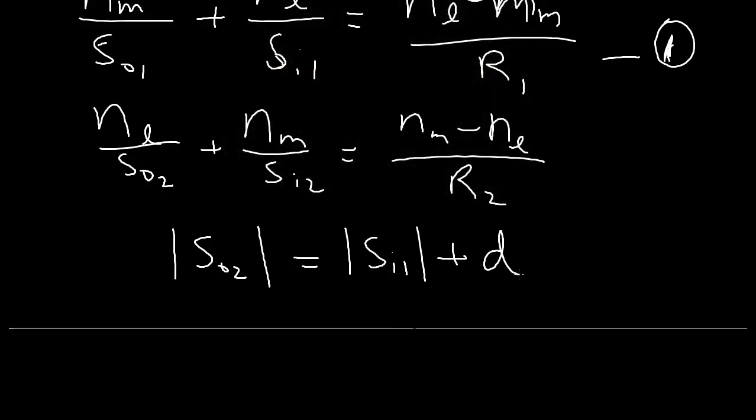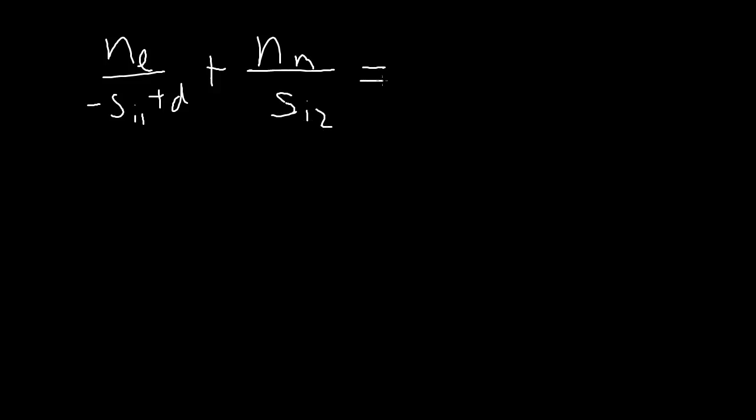And because SI1 is negative, to make that positive, we have to introduce a negative, negative SI1 plus D. So we can sub this in back here. This gives us Nl over negative SI1 plus D plus Nm over SI2 equal to, and I'm going to swap them around. And this is equation number 3.